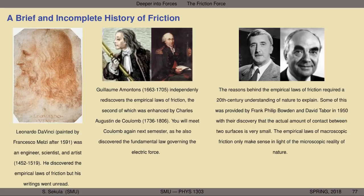Some of the insights were provided by Frank Philip Bowden and David Tabor. Their work was done in 1950, and they discovered that the actual amount of contact — as opposed to the apparent amount of contact you can see with your eyes between two surfaces — the real contact, which is very difficult to see without precise instrumentation, is in fact likely very small. That is why one of the laws appears to be independent of the apparent area of contact for two surfaces. The empirical laws of macroscopic friction really only make sense in light of the microscopic reality of nature, which couldn't be probed until the end of the 1800s and beginning of the 1900s.